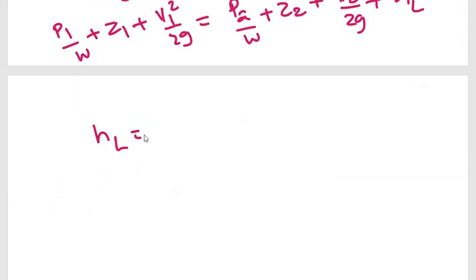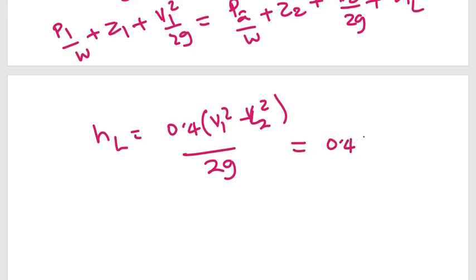The head loss hL is equal to 0.4 times (v1² - v2²) divided by 2g. Substituting the known values: 0.4 into (10² - 4²) out of 19.62.